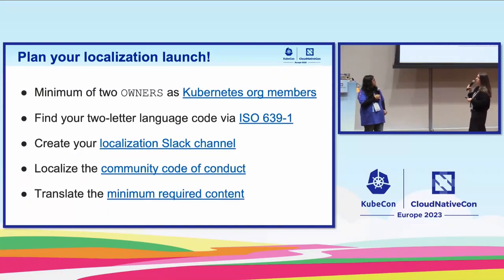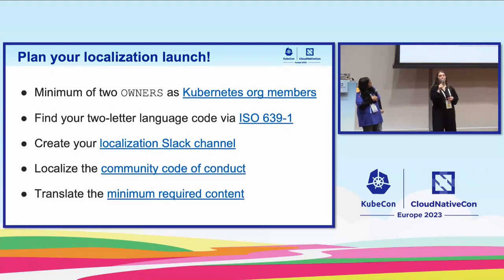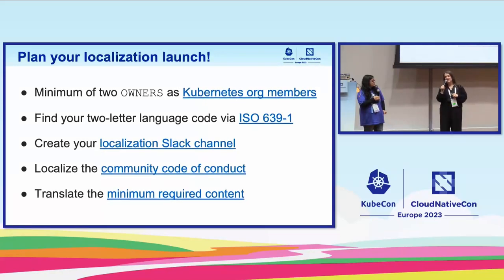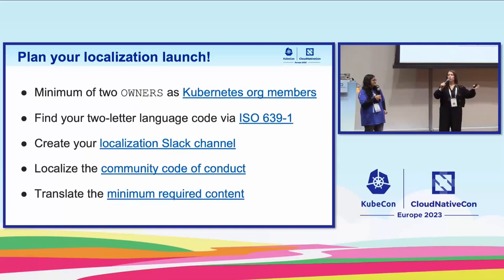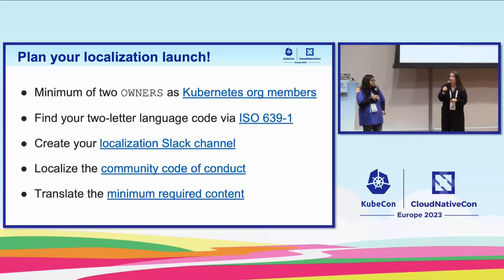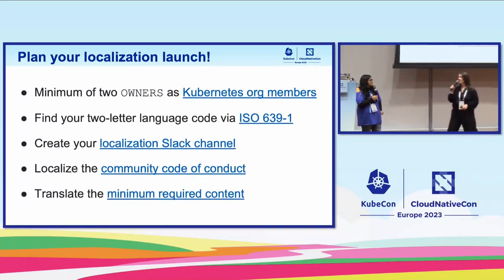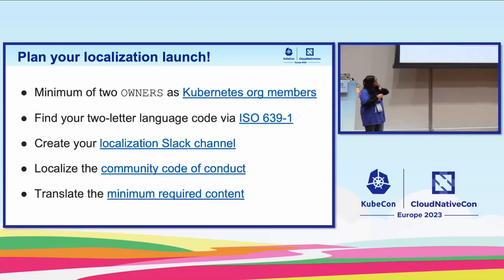We also want you to be translating the minimum required content before we get your localization published. That's the last key process step — we really say, if you want to show your community how to use Kubernetes, this is the minimum docs they'll need to read and know about. And one of those very importantly is the code of conduct. That's another area of translation that we find really, really important.